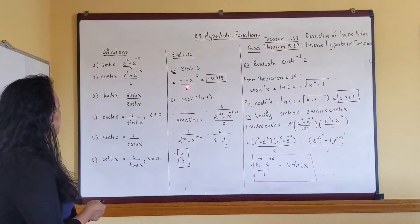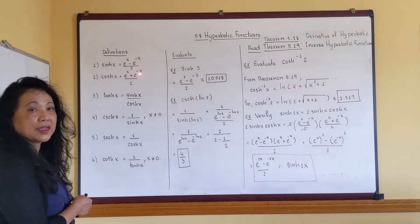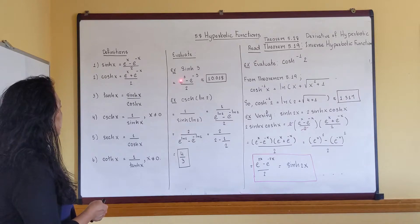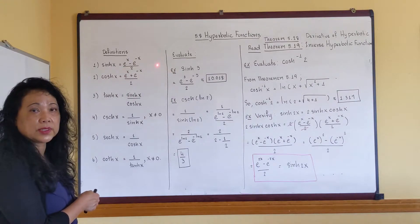Let's look at the first example. I have hyperbolic sine of 3, so I just apply the formula which is straightforward. I'm gonna have e to the 3 minus e to the minus 3 over 2 according to the definition. Use your calculator, you get an answer 10.018. It's very straightforward.